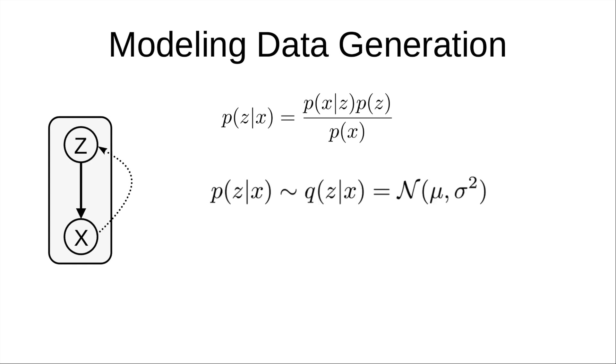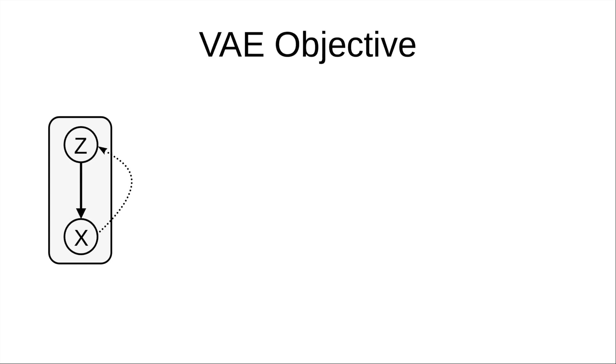So instead, we try to find an approximation q(z|x), which we define to be a member of the Gaussian family. Obviously the actual distribution might be nothing like a Gaussian, but we try to find as close an approximation as we can, and we do that by finding such a member of the Gaussian family that minimizes the distance between q(z|x) and p(z|x). We use the KL divergence as the metric that we want to minimize, which is nothing but this.